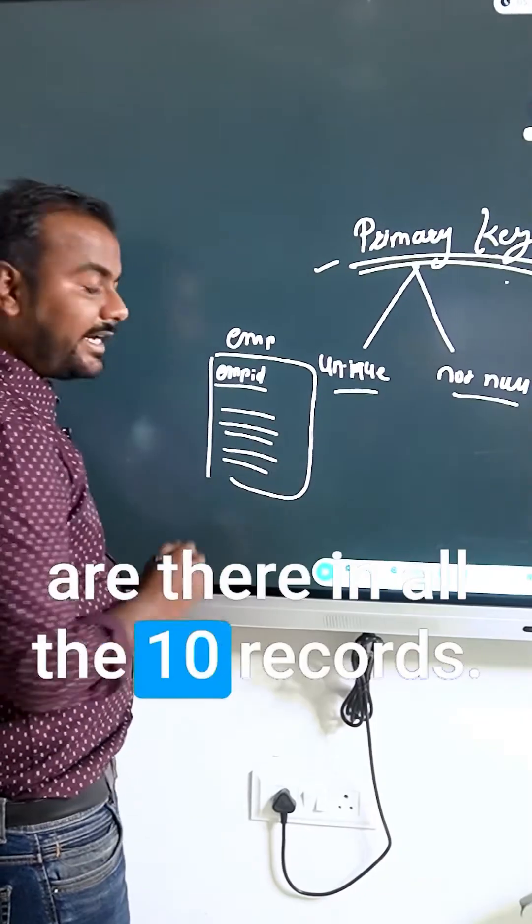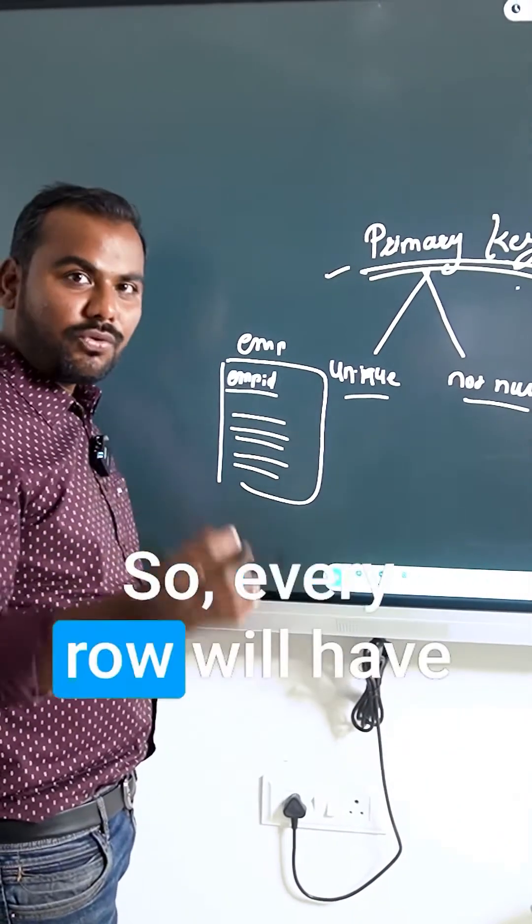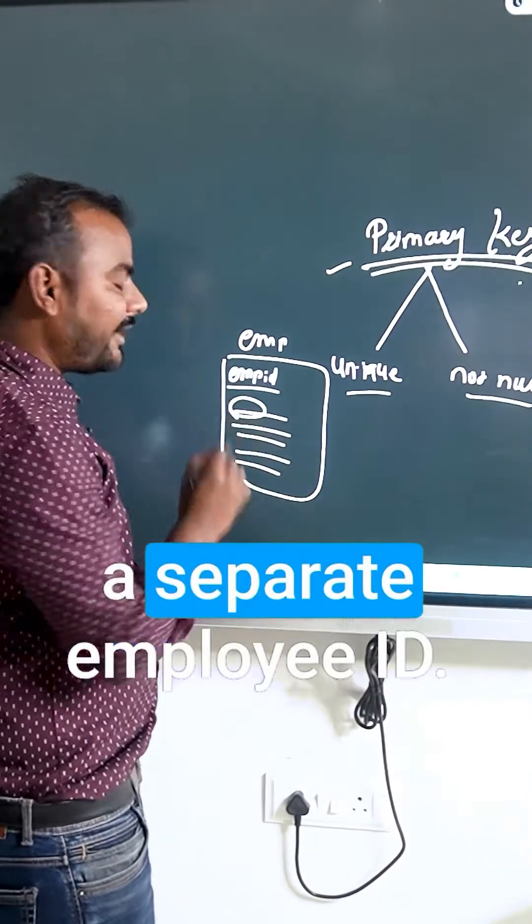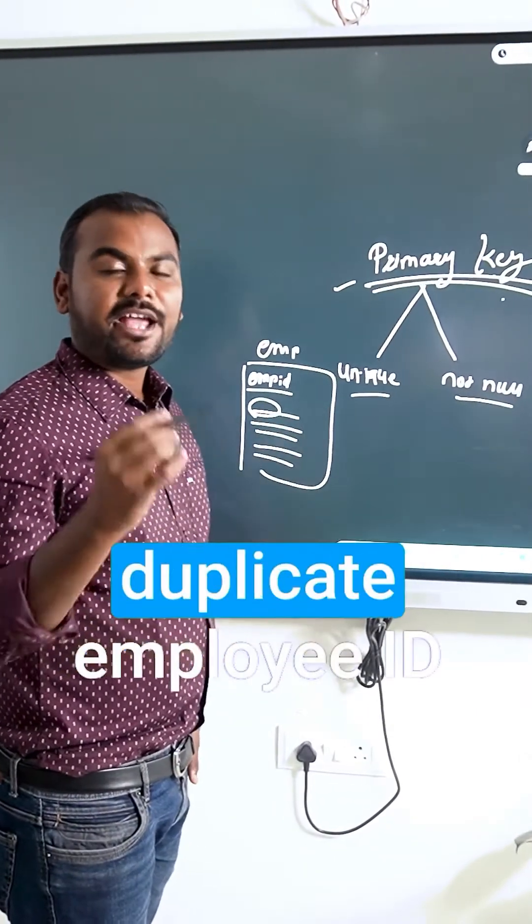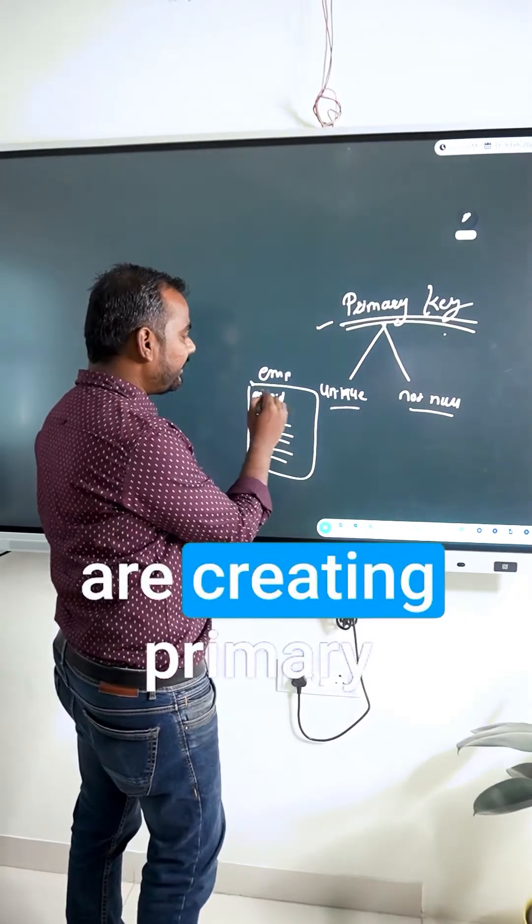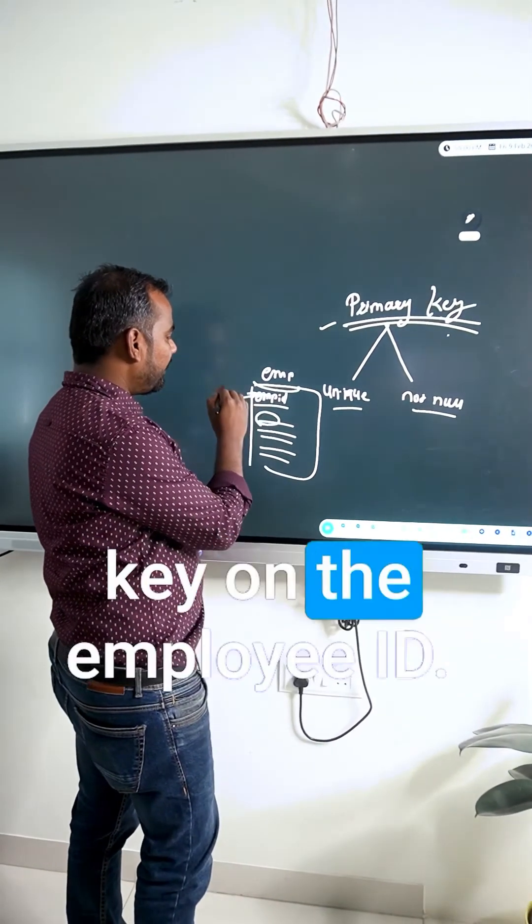In all 10 records, every row will have a separate employee ID. We cannot have a duplicate employee ID for two persons. That is the reason we create a primary key on the employee ID.